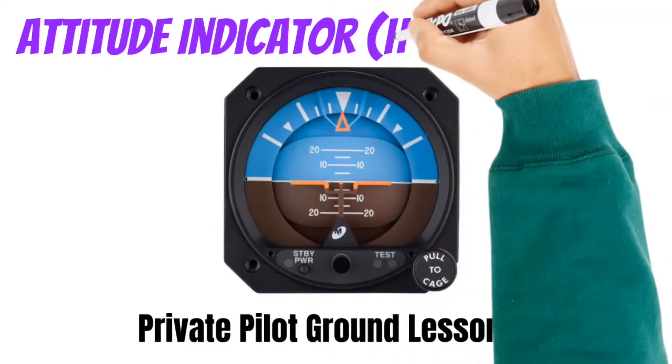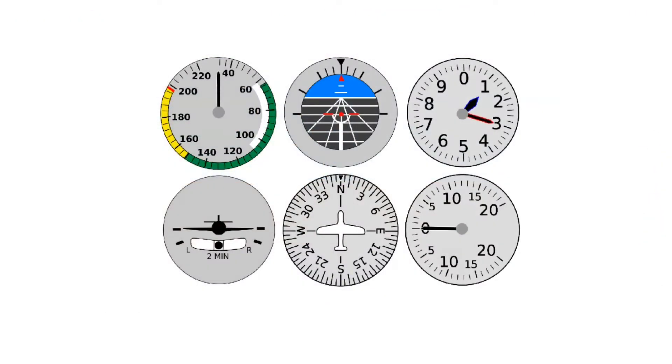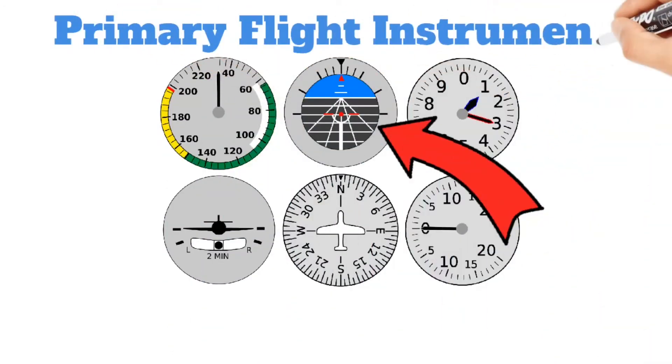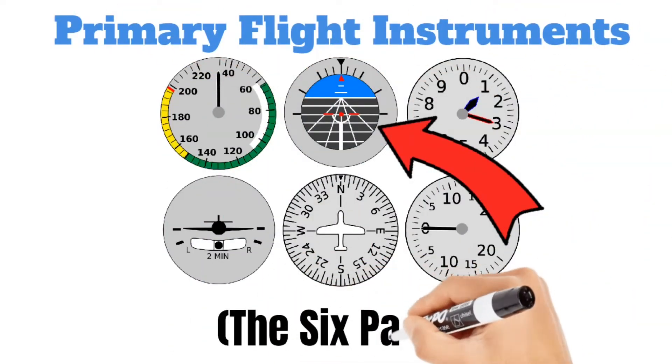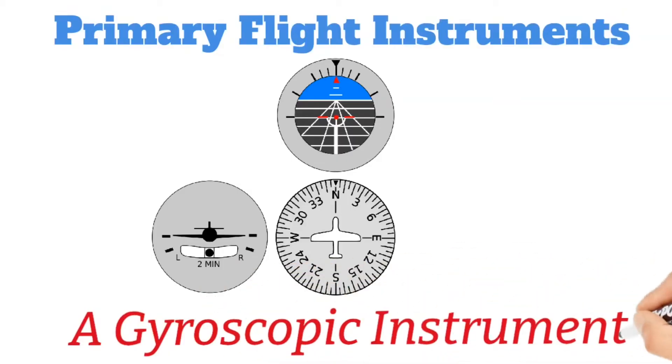In this video, we'll be explaining everything a private pilot needs to know about the Attitude Indicator and how it works. Just like the Heading Indicator, the Attitude Indicator is one of the six primary flight instruments, also known as the six-pack, and it's also a gyroscopic instrument.